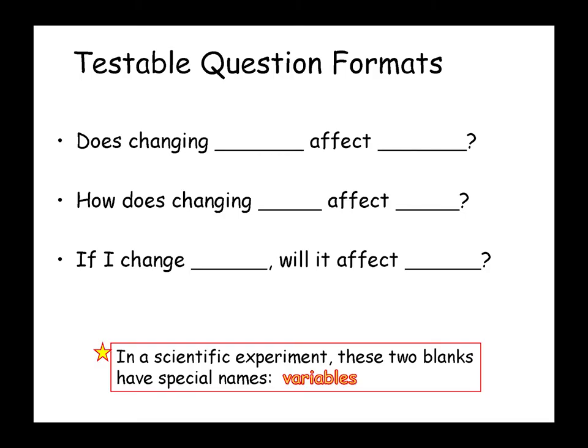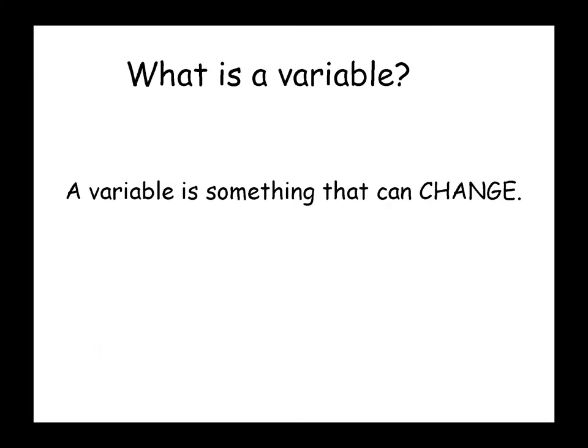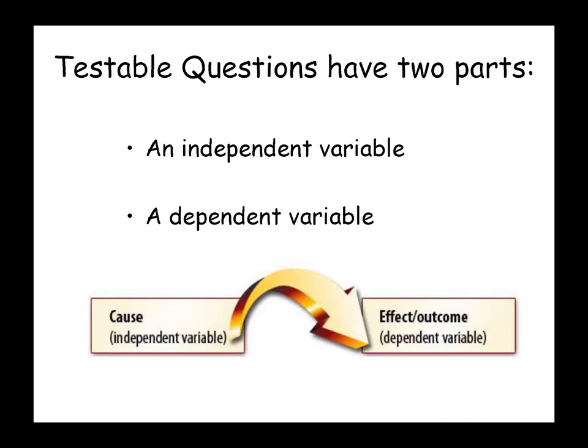In a scientific experiment, these two blanks have special names: variables. What is a variable? A variable is something that can change. Testable questions have two parts: an independent variable and a dependent variable.